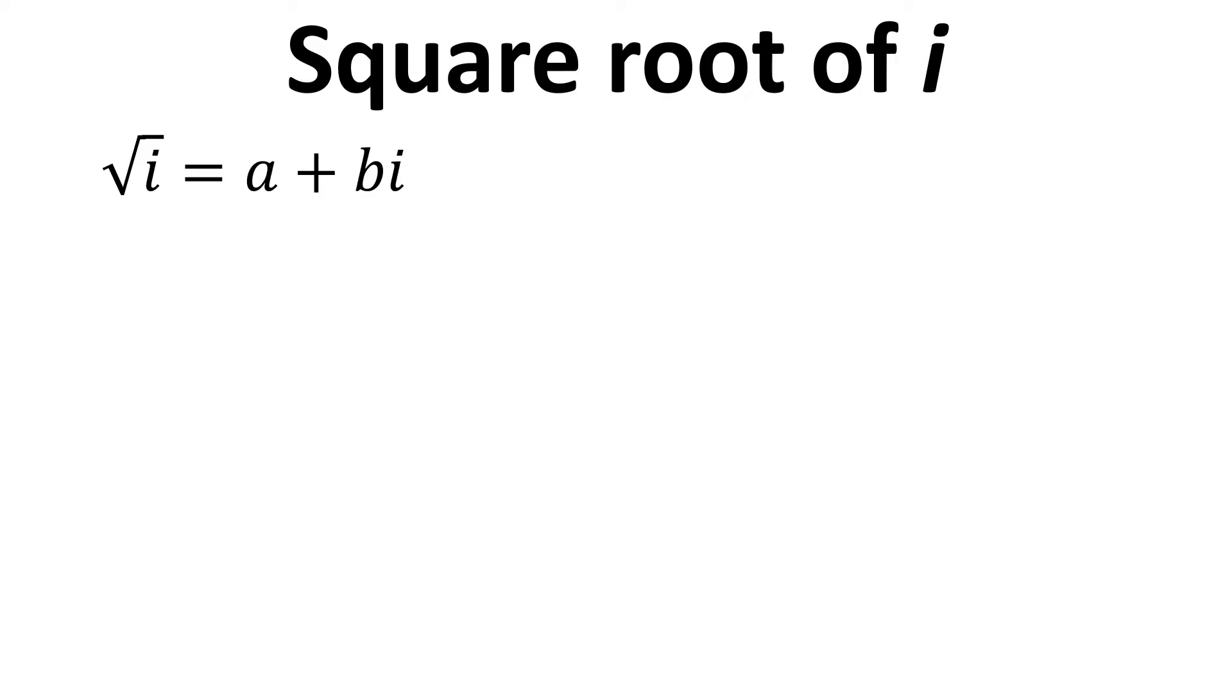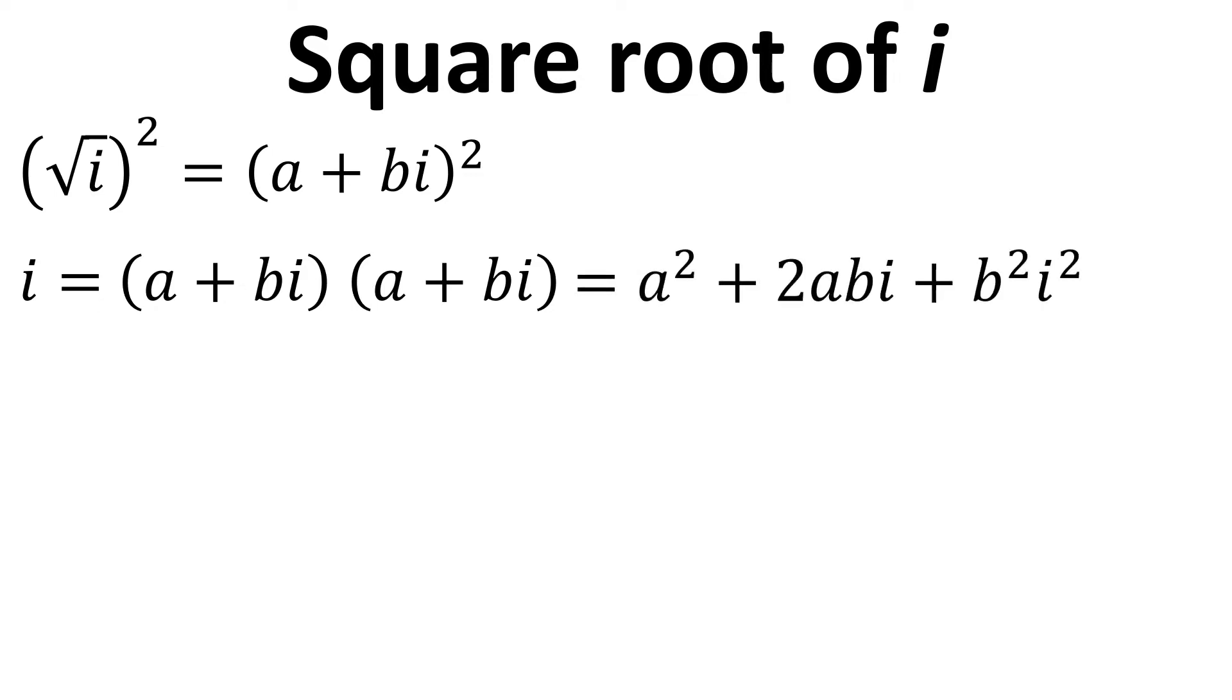So the first thing we're going to do is square both sides and if we simplify this we have i equals (a plus bi) times (a plus bi). If we multiply those terms out we get a squared plus 2abi plus b squared i squared. Now i squared goes to minus 1 so overall we end up with a squared plus 2abi minus b squared.